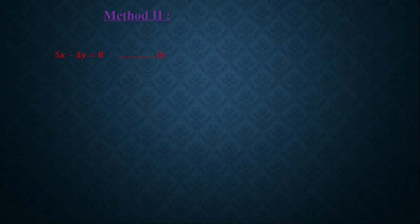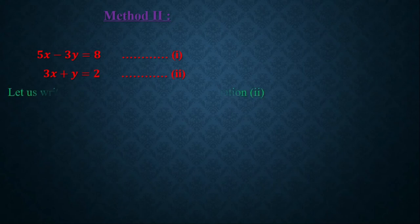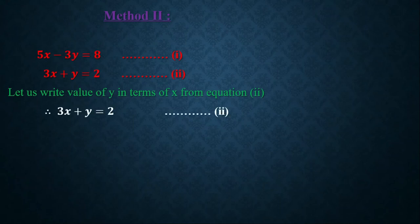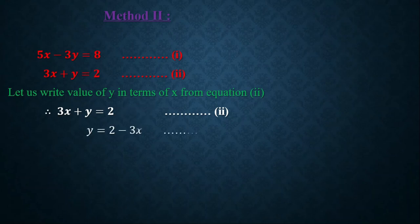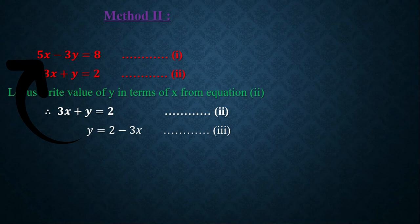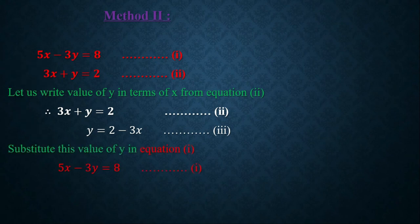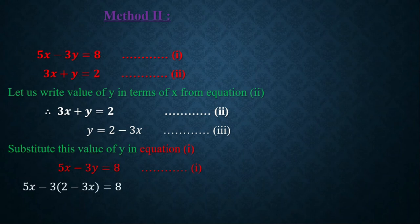Now it's time for Method 2 — the substitution method. Again we use equation 1: 5x − 3y = 8 and equation 2: 3x + y = 2. From equation 2, we find y in terms of x: y = 2 − 3x. This is equation 3. We then substitute equation 3 into equation 1: 5x − 3(2 − 3x) = 8.